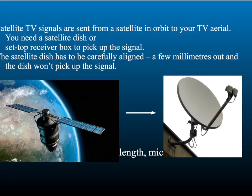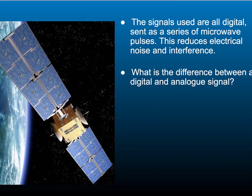The satellite dish has to be very carefully aligned — a few millimetres out and it won't be able to pick up the signal. All signals sent to and from satellites are digital. This allows the signal to be processed by computers and any interference can be removed. Can you remember what the difference between a digital and an analogue signal is?